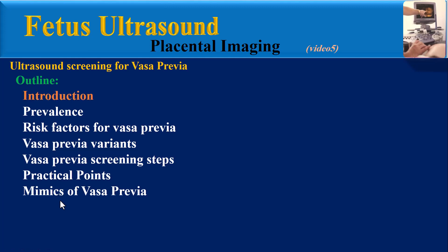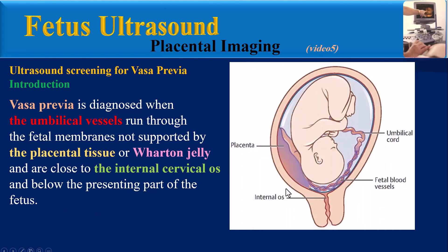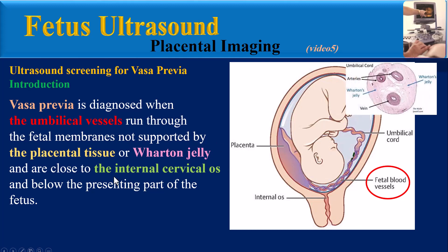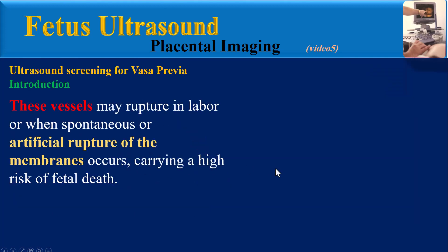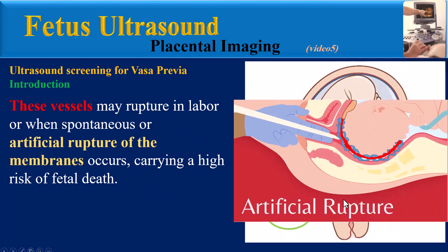Introduction: Vasa Previa is diagnosed when the umbilical vessels run through the fetal membranes not supported by placental tissue or Wharton's jelly, and are close to the internal cervical os and below the presenting part of the fetus. These vessels may rupture in labor or when spontaneous or artificial rupture of the membranes occurs, carrying a high risk of fetal death.